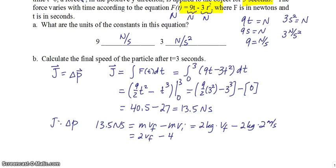So that equals 13.5 newton seconds. 4 plus 13.5 is 17.5 newton seconds equals 2 times V_f. So V_f is 8.75 meters per second.